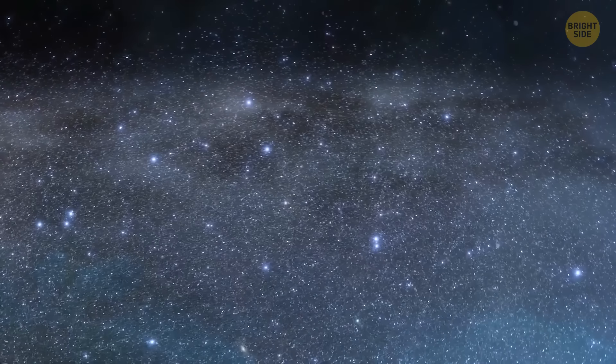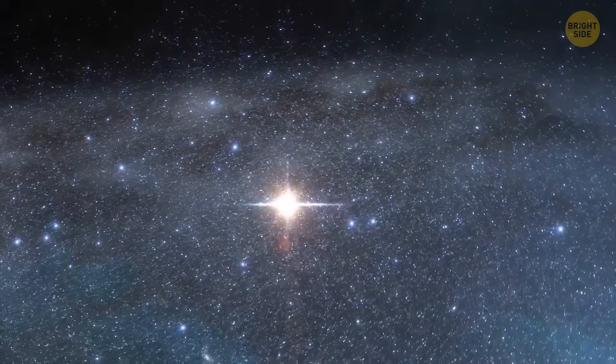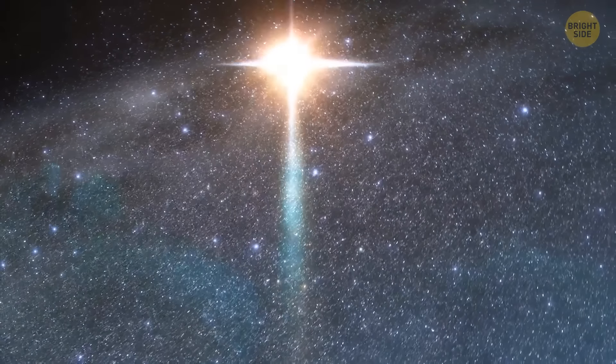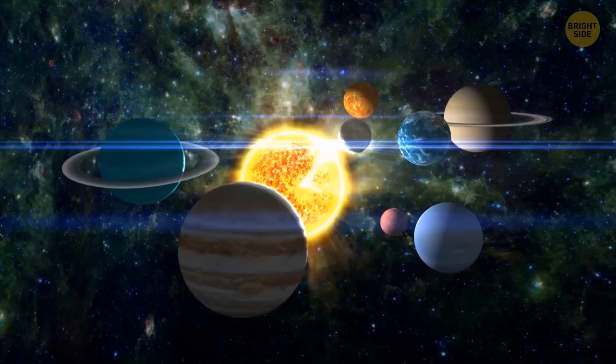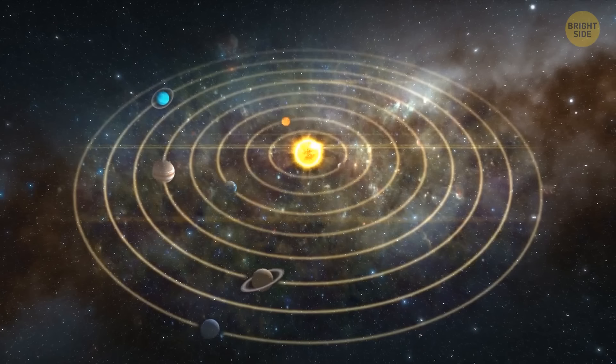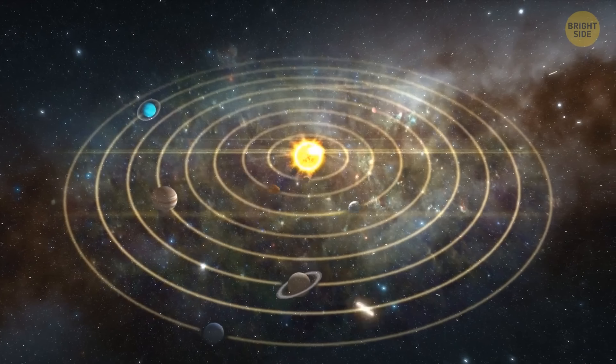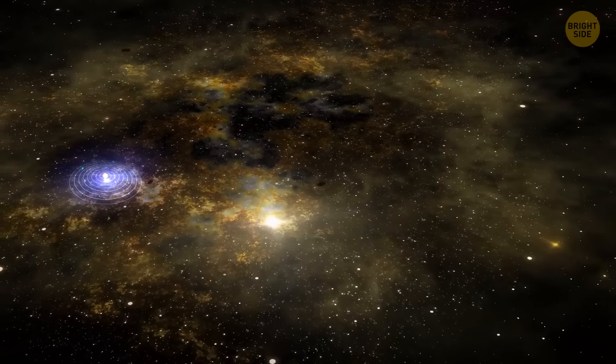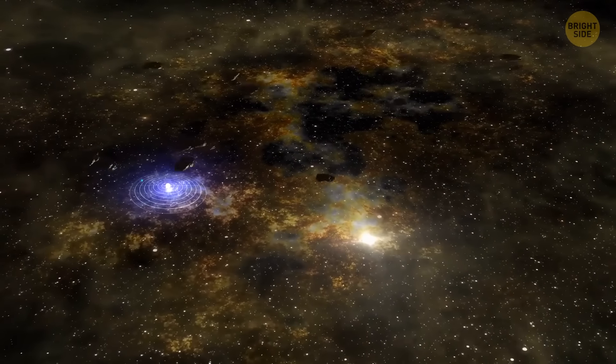The spiral arms are the areas where new stars are born. It's where the most stars, gas, and dust are concentrated. And this is where the solar system is located. Our system is like a tiny speck in the grand cosmic tapestry of the Milky Way. It's about 26,000 light-years away from the center of the galaxy. A pretty long distance, isn't it?